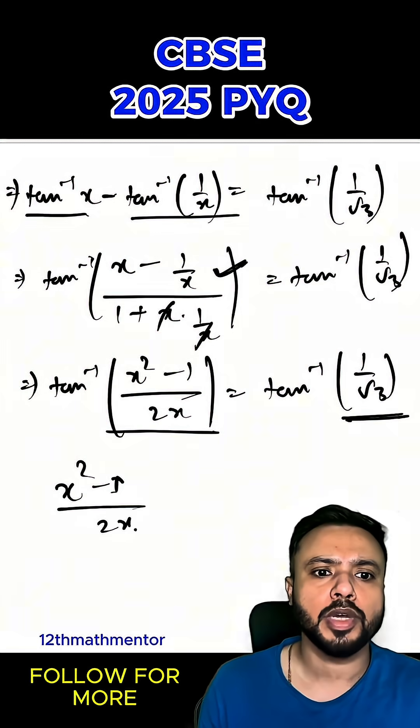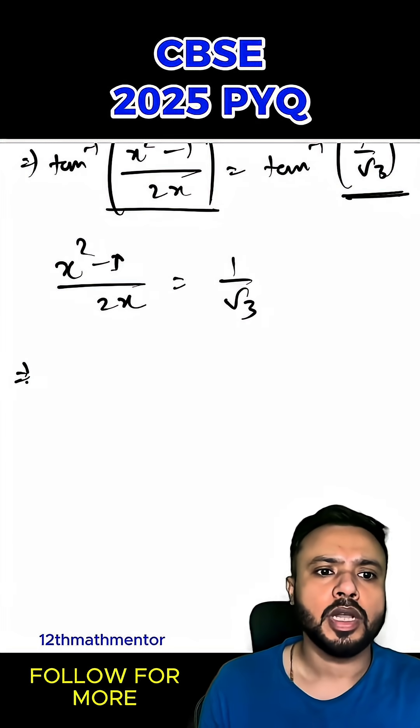From here I can say that (x² - 1)/(2x) = 1/√3. Now I'll simplify it to get a quadratic equation.